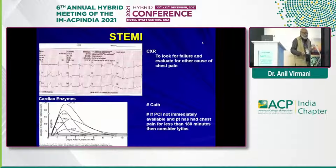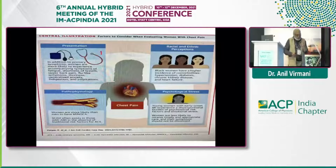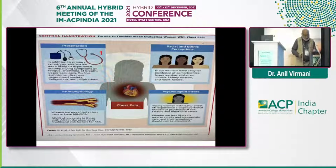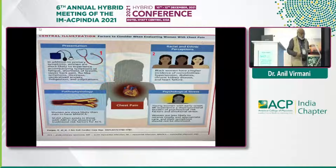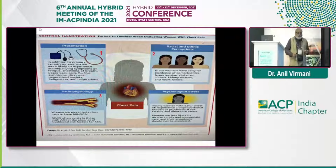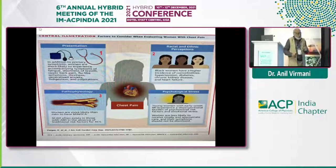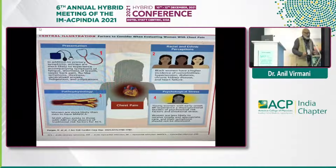We must remember certain gender differences. As far as presentation is concerned, women will most likely present with associated symptoms like breathlessness, dizziness, palpitations, and anxiety. Black women have a higher incidence of comorbidities like hypertension, diabetes, and chronic kidney disease. Women are more likely to suffer from MINOCA — myocardial infarction with non-obstructive coronary arteries — or they can get a spontaneous coronary artery dissection. Young women with MI have a tremendous amount of psychological stress, and because of that, their anxiety is likely to be missed; the diagnosis is likely to be missed and they may be labeled as hysterical or functional.